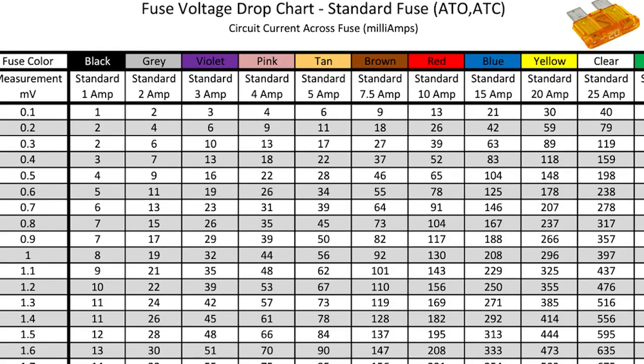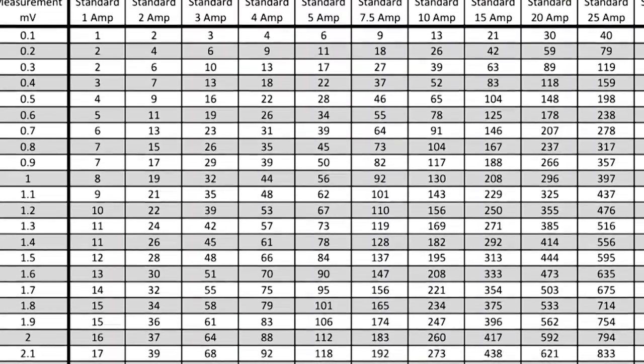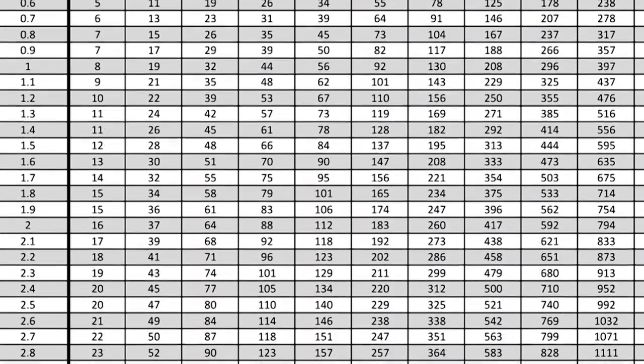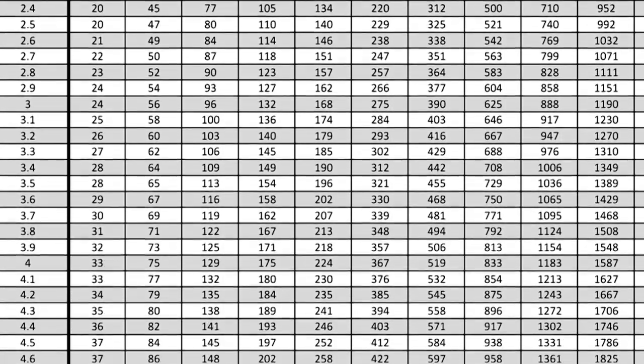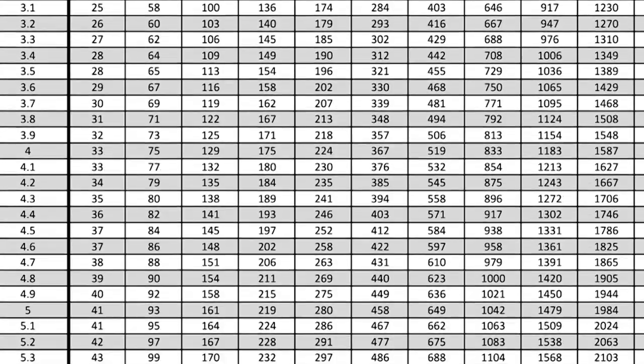You have to convert the voltage measurement to current using any of the numerous conversion charts available on the internet before you could conclude that the current draw was excessive or just part of a bigger problem. Most importantly, it's easy to miss an intermittent problem. Unless you're measuring drop across the fuse at the exact moment the draw is occurring, you can see it would be very easy to miss that circuit and overlook it as the cause.